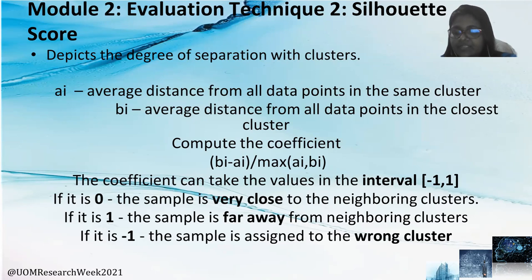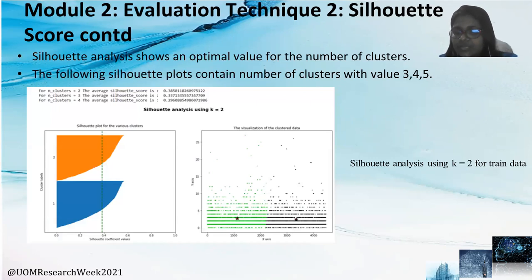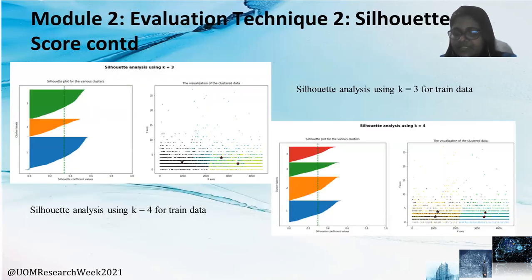The silhouette score depicts the degree of separation within clusters. The coefficient is calculated by dividing the difference between the average distance of all points in the same cluster and the average distance from all points in the closest cluster by the maximum of them. The coefficient can take values in the interval minus 1 to plus 1. If it is 0, the sample is very close to the neighboring cluster. If it is 1, the sample is very far from the neighboring cluster. If it is minus 1, the sample is assigned to the wrong cluster. The silhouette analysis shows an optimal value for the number of clusters, and plots show that 3 and 4 are bad choices due to presence of negative area and high fluctuation. Number of clusters 2 has the best average silhouette score, and when increased to 3 and 4, the score gradually decreases.